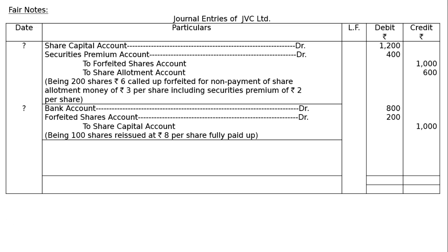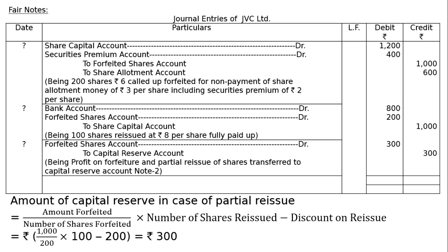Profit on forfeiture and reissue: Forfeited Shares Account debited, to Capital Reserve Account — as per Note 2. Amount of capital reserve in case of partial reissue: (Rs. 1000 ÷ 200 shares) × 100 shares reissued − Rs. 200 discount on reissue = Rs. 300. Debit Rs. 300, Credit Rs. 300. Being profit on forfeiture and partial reissue of shares transferred to Capital Reserve Account.